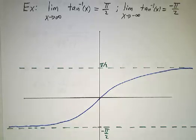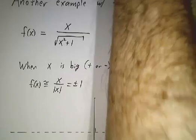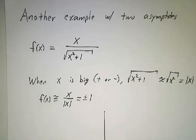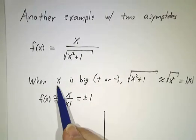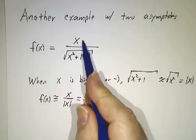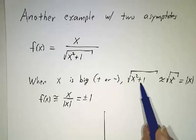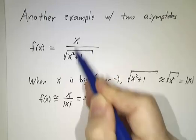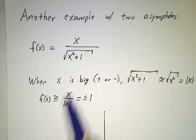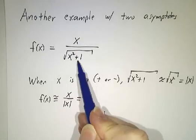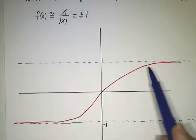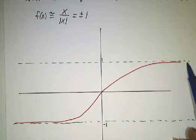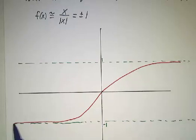For an algebraic example of the same kind of behavior, look at x over the square root of x squared plus 1. If you plug in a big number like 1,000, you get 1,000 over the square root of a million and 1, and that square root is really close to 1,000 — so the result is really close to 1. But if you plug in negative 1,000, you get negative 1,000 over the square root of a million and 1, which is close to negative 1. So the curve has an asymptote at y equals 1 on the right, and a horizontal asymptote at y equals negative 1 as x goes to minus infinity.